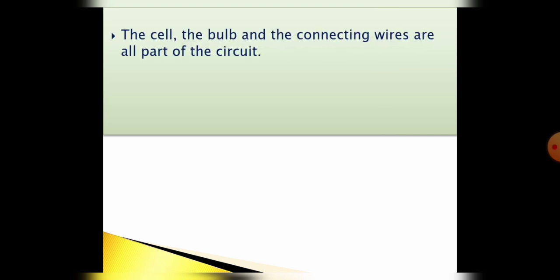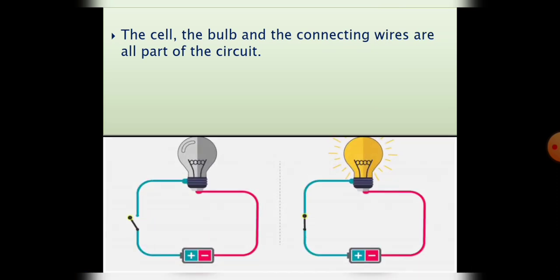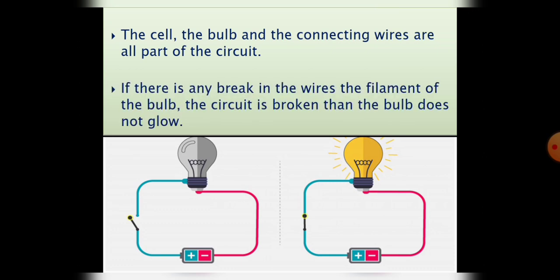So these are the parts of the circuit. Students, look at this picture. Two conditions are mentioned here: one is a broken circuit and another is a closed complete circuit.